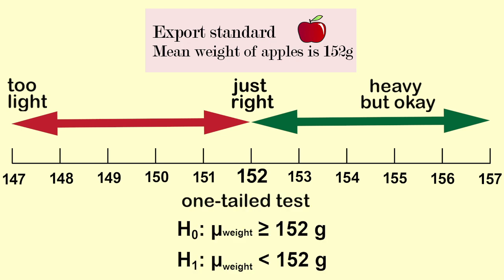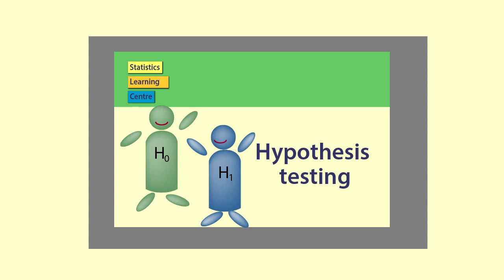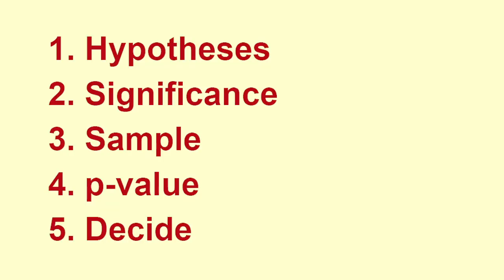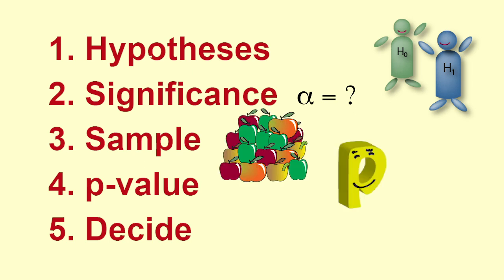If we were wanting to know if the mean weight of the apples was different from 152 grams, then we would perform a two-tailed test. In our video hypothesis testing, we gave five steps. They are hypotheses, significance, sample, p-value, decide.